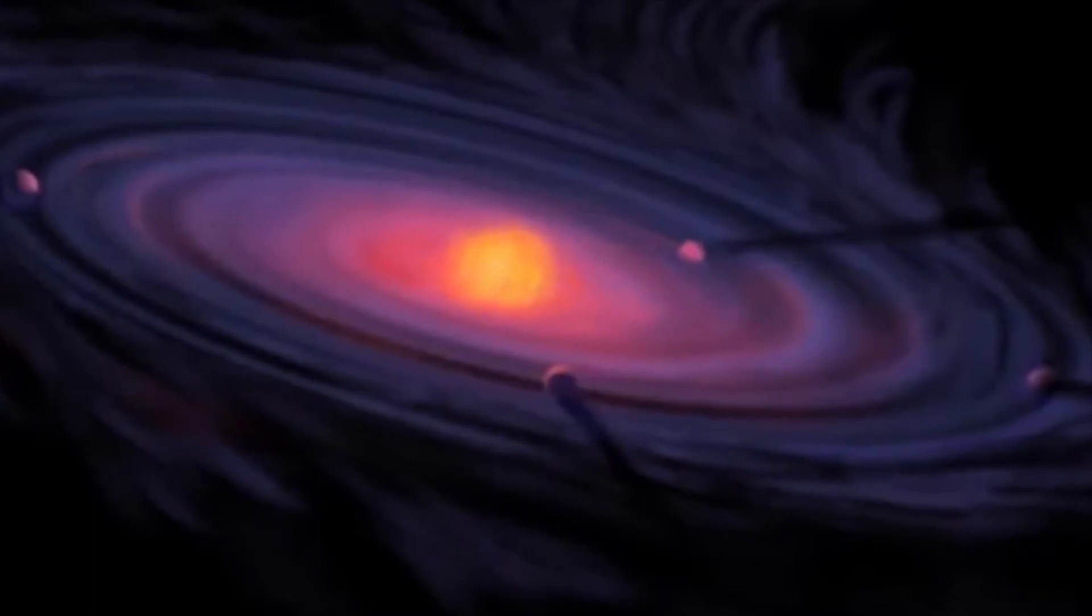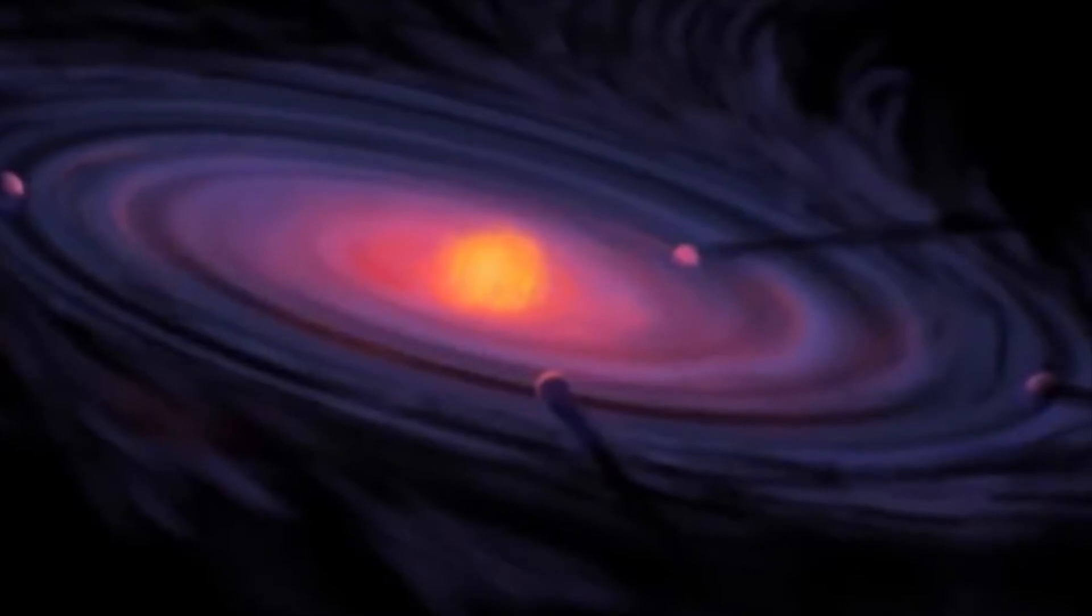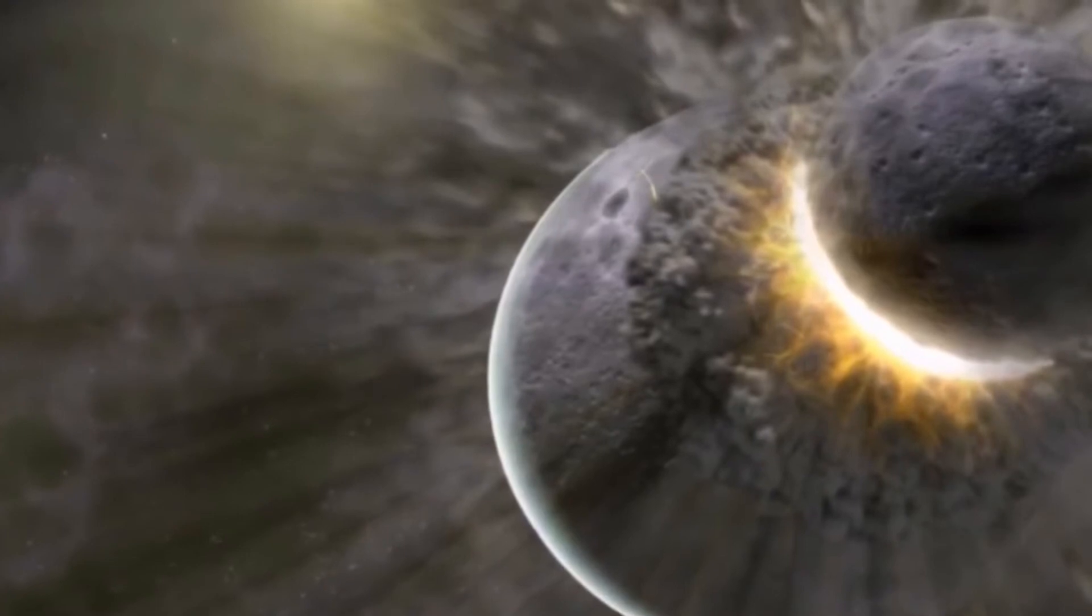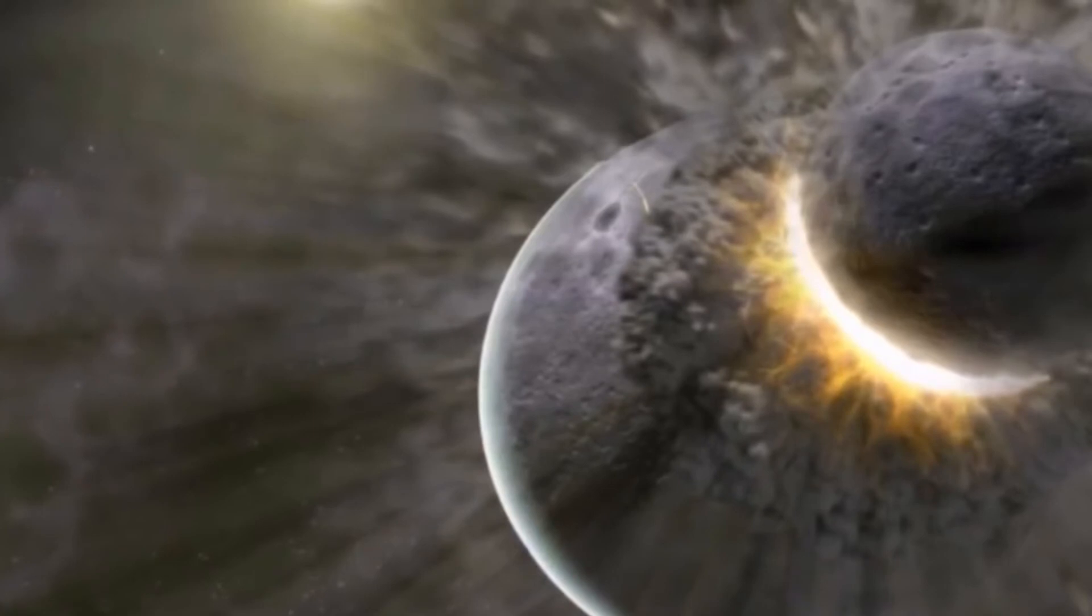Uranus begins to form around the sun. Four billion years ago, a massive icy body, twice the size of the Earth, collides with Uranus.